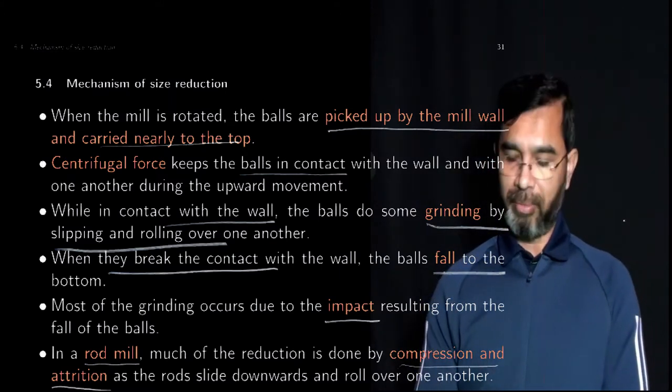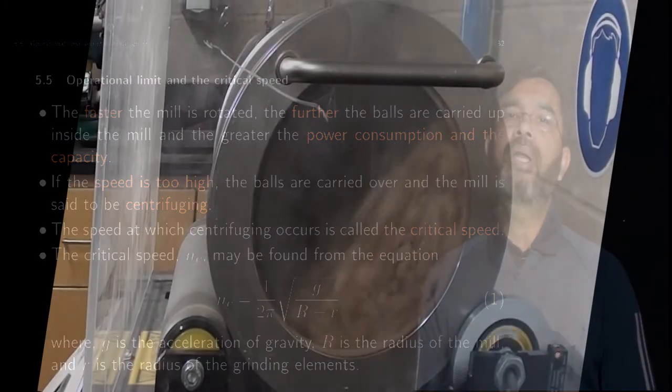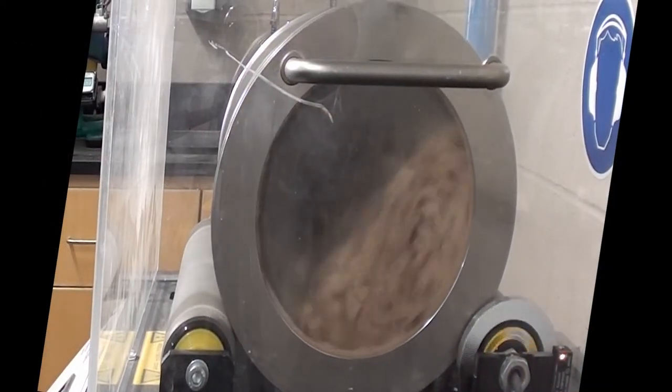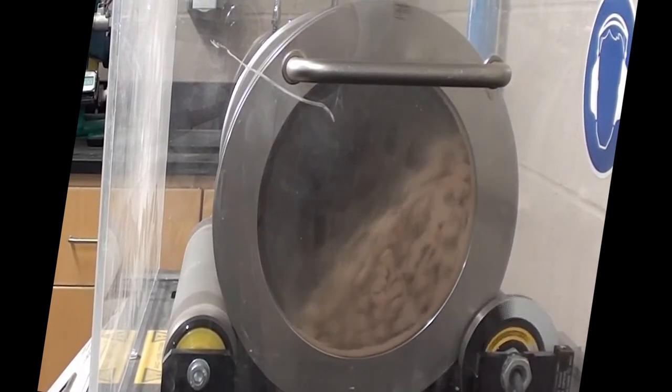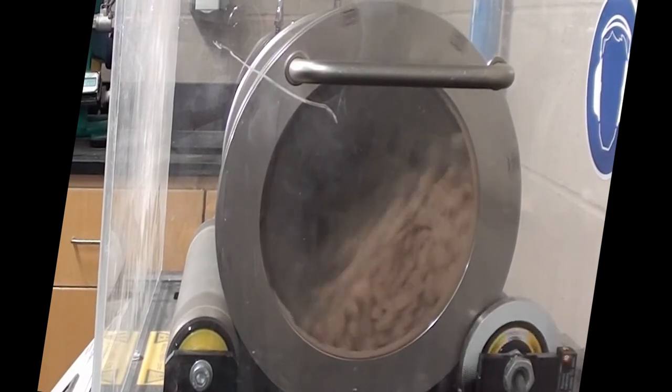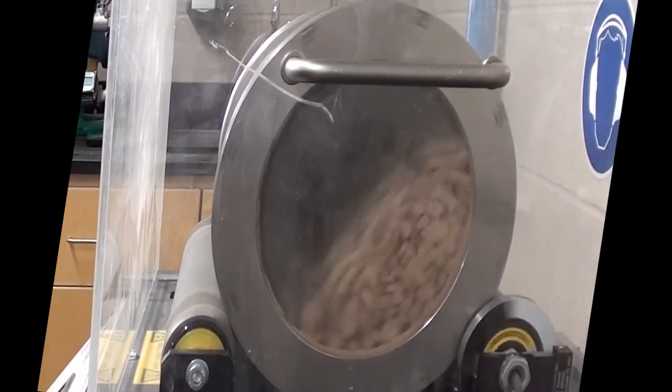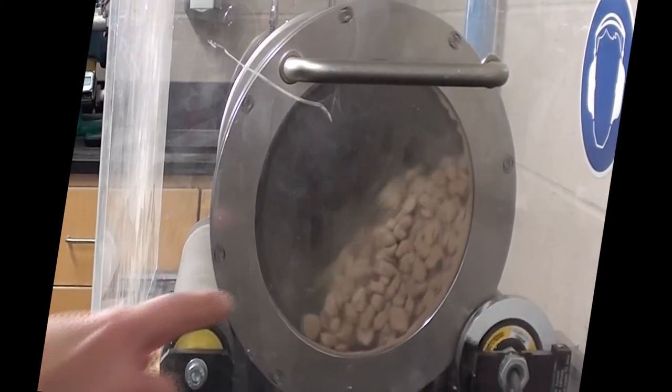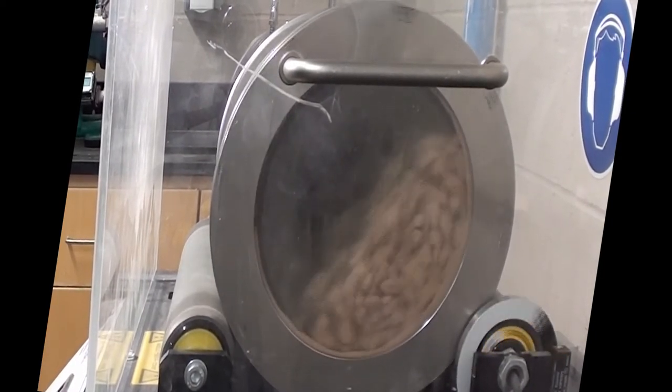There are some operating limits of the ball mill regarding how fast you can move the mill. The faster the mill is rotated, the further the balls are carried up. You may want to take the balls further near the top so that the distance traveled to fall will be more. In that way, you will create more impact force and that will cause better size reduction. However, that will come at the cost of higher power consumption and capacity limits.